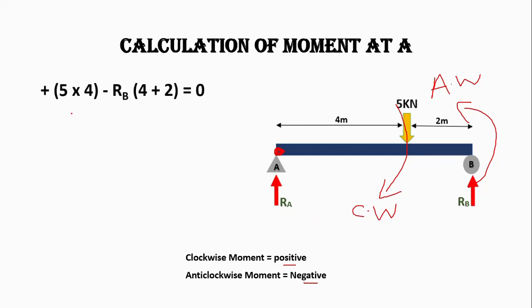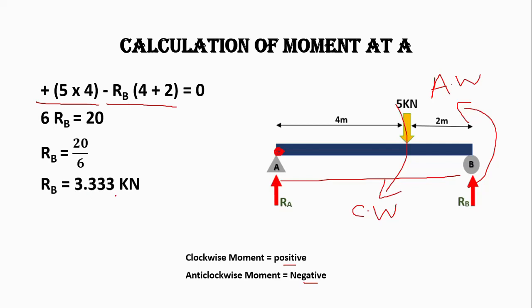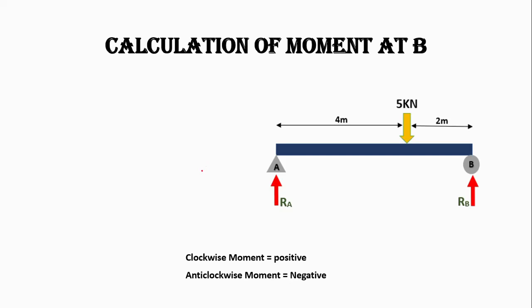Here you can see we have plus 5 × 4, meaning 5 is the load acting at 4 meters from A, and the positive sign shows this moment is in the clockwise direction. Similarly, minus RB × (4 + 2): RB is the support reaction, the minus sign shows it is anti-clockwise, and (4 + 2) is the moment arm from A to B. This equation gives 6RB = 20, so RB = 3.33 kilonewtons.